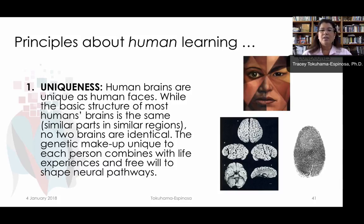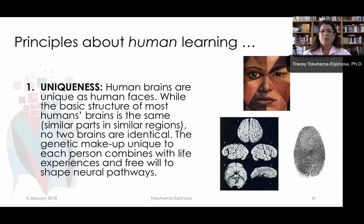Human brains are as unique as human faces. While the basic structure of most human brains is the same — similar parts and similar regions — there are no two brains that are identical. The genetic makeup, unique to each person, combines with life experiences and free will to shape different neural pathways. So humans are unique.